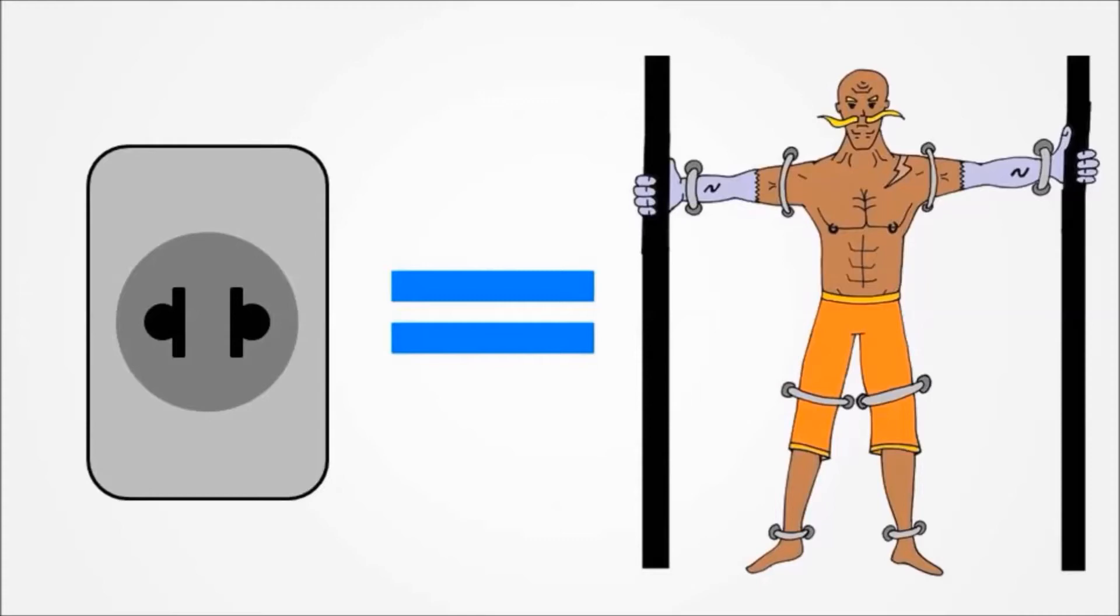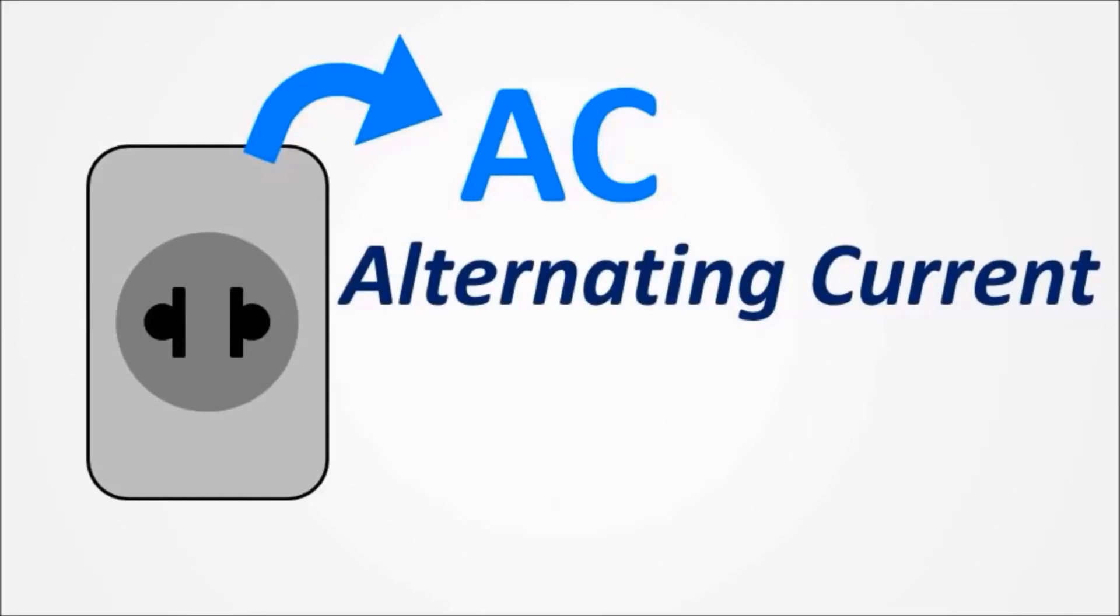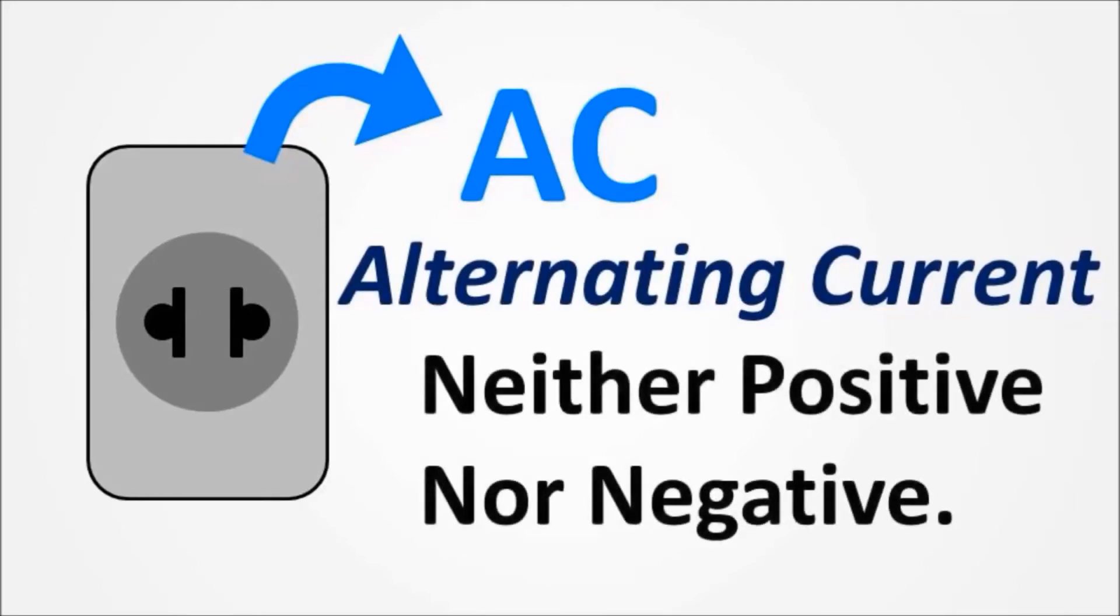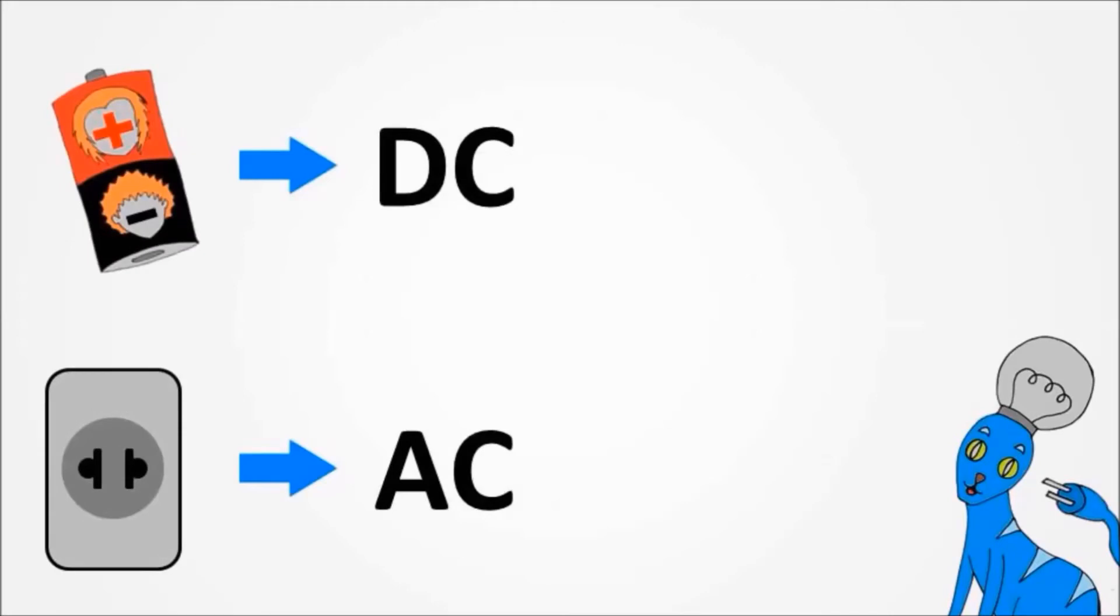AC energy. AC stands for alternating current, and it has neither positive nor negative. So we have two distinct types of energy, AC and DC.